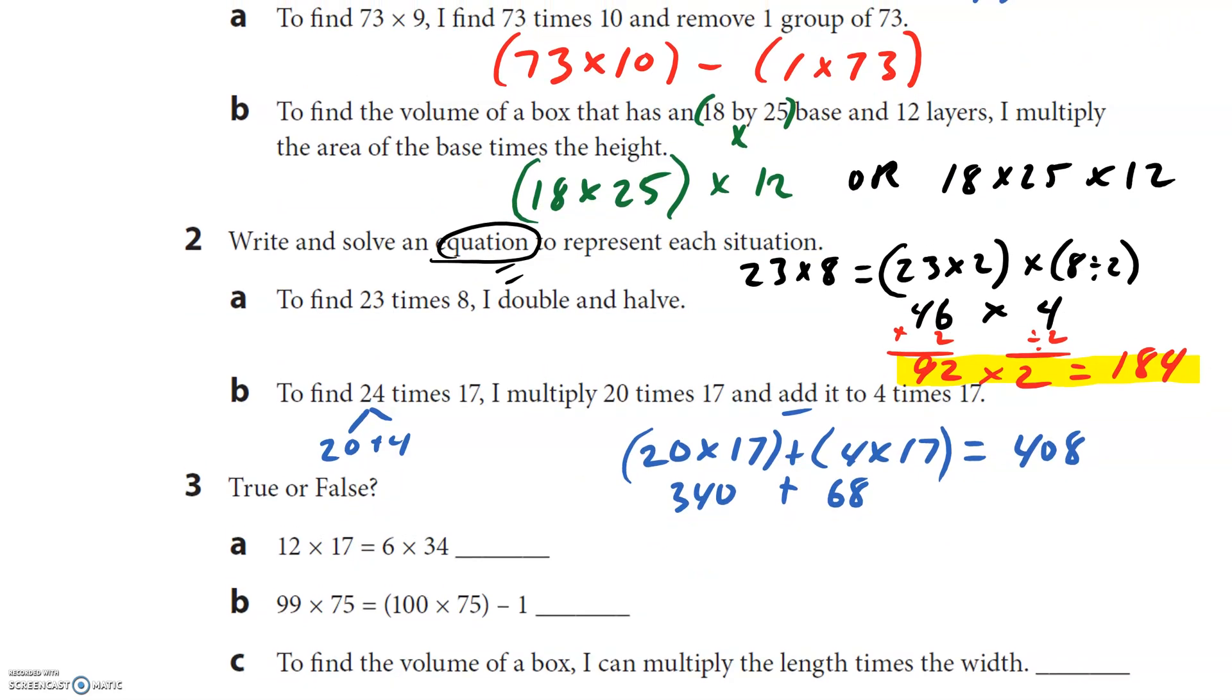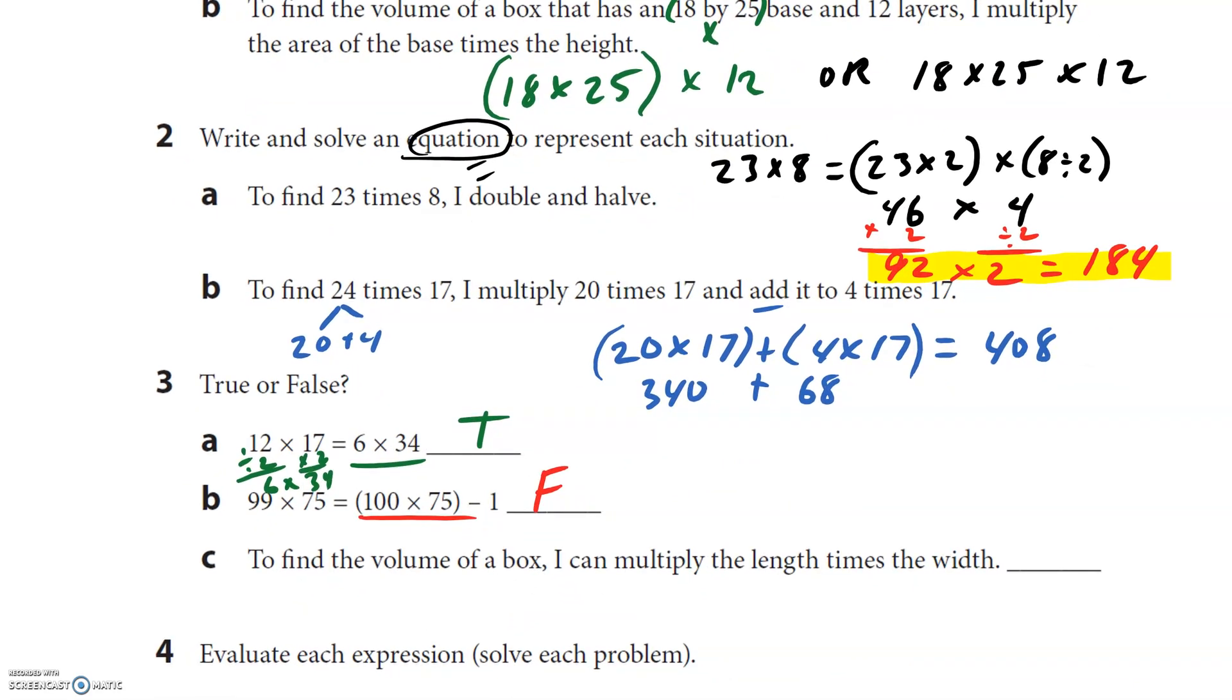True or false? 12 × 17 is the same thing as 6 × 34. I'm looking at it and I see a relationship between 12 and 6. So if I half 12, that's 6. And if I double 17, that's 34. And that is right there. So this is true. I don't even have to do all the work. I don't have to do the whole problem if I can prove they're exactly the same thing. Next one: 99 × 75 = 100 × 75 - 1. There's 99 groups of 75. So over here is 100 groups of 75, and I'm going to subtract 1. I think I need to subtract 1 group of 75, so I think that's false.